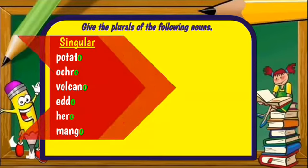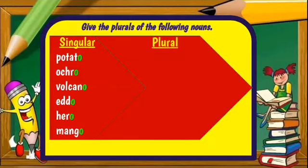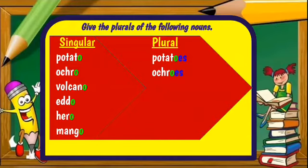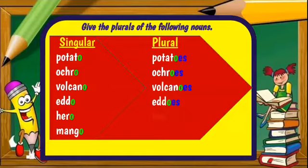Now let's form the plural of these singular nouns. Potato — we have potatoes. We add ES to form the plural. Hero — we have heroes. And mango — we have mangoes. All singular nouns ending with O: to form the plural, we add ES.